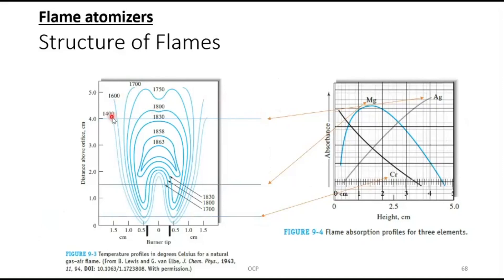These are different temperature profiles and different regions in which different elements are analyzed. In this region, four centimeters from the tip of the burner, silver is analyzed. Then 1.5 centimeters above the tip, magnesium is analyzed. Near to the tip, at 0.3 centimeters, chromium is analyzed.